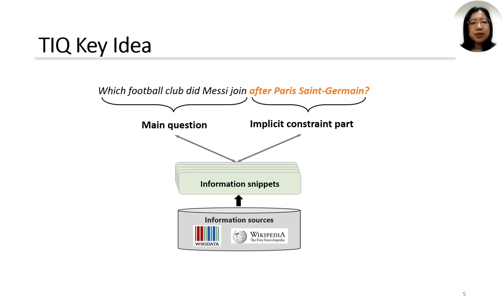A typical implicit question has two parts: the main question that specifies the information need, and the implicit constraint part that provides the actual temporal constraint. The key idea of our method is to build the two parts from different pieces of evidence, denoted as information snippets, connect the two parts via temporal relations — before, after, or during — and utilize the ability of large language models to rephrase them into natural questions.